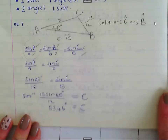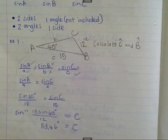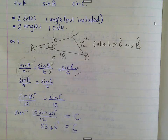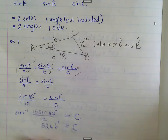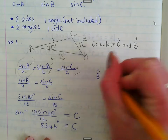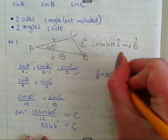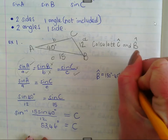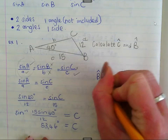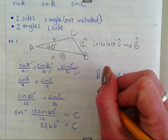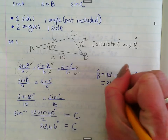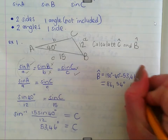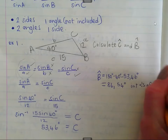We still need to find angle B, but we still don't have side b. To find angle B, all we need to say is 180° minus 40° minus 53.46°, which gives an answer of 86.54 degrees. The reason is interior angles of a triangle sum to 180°.